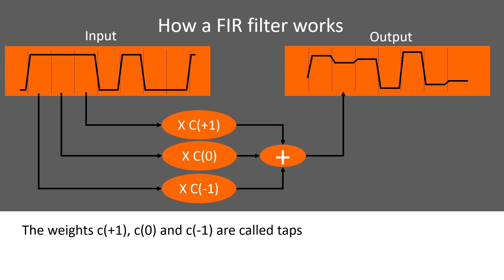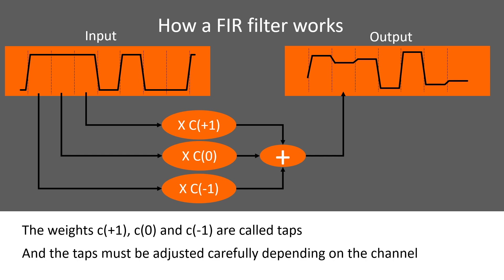The weights C plus 1, C zero, and C minus 1 are called taps. The taps must be adjusted carefully depending on the channel.